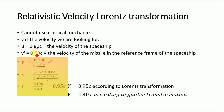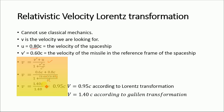Substituting the values: v′ = 0.60c and u = 0.80c. So v = (0.60c + 0.80c) / (1 + (0.60c × 0.80c)/c²). The c² in the denominator cancels with c × c from the product, giving v = 1.40c / (1 + 0.48) = 1.40c / 1.48, which equals approximately 0.95c.